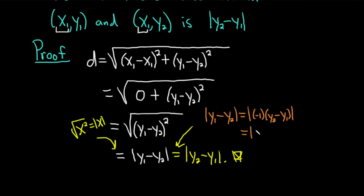And then when you have the absolute value of a product, you can break it up like this. The absolute value of negative 1 is 1, and 1 times anything is that anything. So this is going to be the absolute value of y₂ minus y₁. That's just a little verification of that step there.